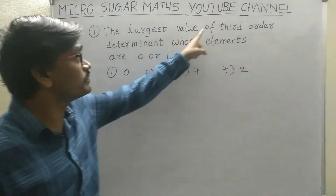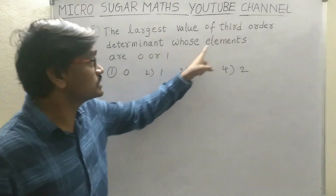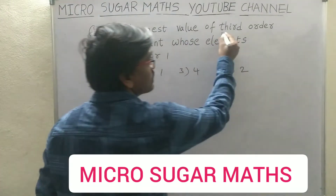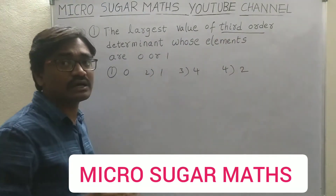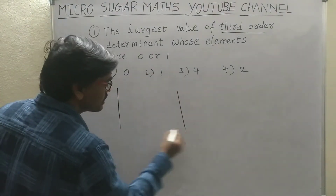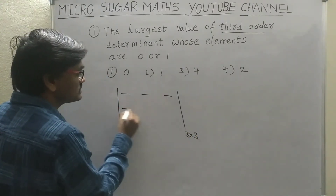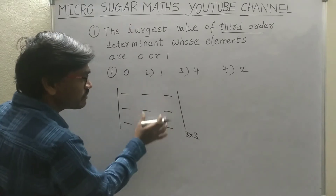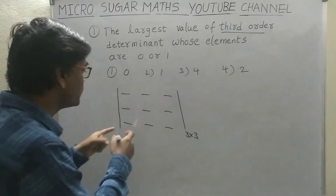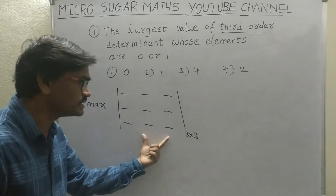The largest value of a third-order determinant, whose elements are 0 or 1 only. Third-order means how many elements it contains — 9 elements. Therefore, our required determinant is a third-order determinant containing 9 elements. This determinant is formed by only 0 or 1, and we need the maximum — the largest value of this determinant.